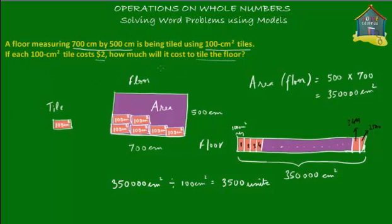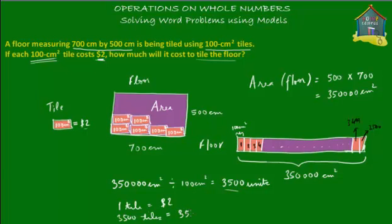But that's not what the question is asking — there's one more step. Each 100 centimeter square tile costs two dollars. Each little pink tile costs two dollars. If one tile costs two dollars, then 3,500 tiles will cost 3,500 times two dollars, which equals seven thousand dollars. So seven thousand dollars is how much it will cost to tile the floor.